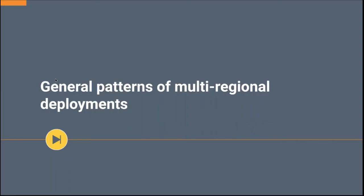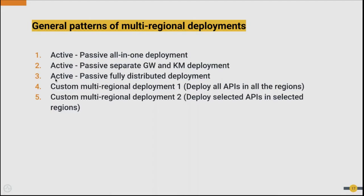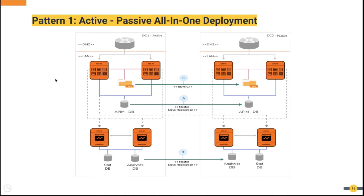Now we will take a look at some deployment patterns for multi-DC and multi-regional deployments. We will go through five patterns — three of them are multi-DC and the other two are multi-regional deployments. First, let's look at the first deployment pattern, which is the active-passive all-in-one deployment.